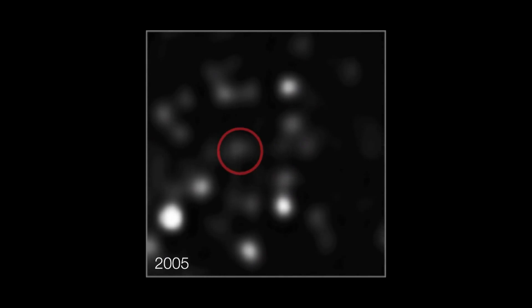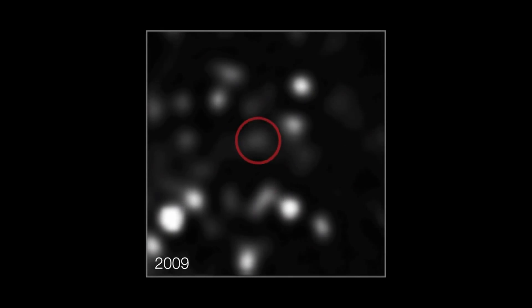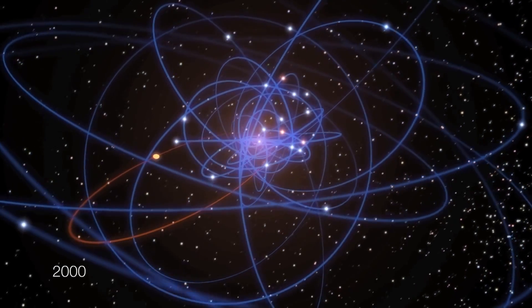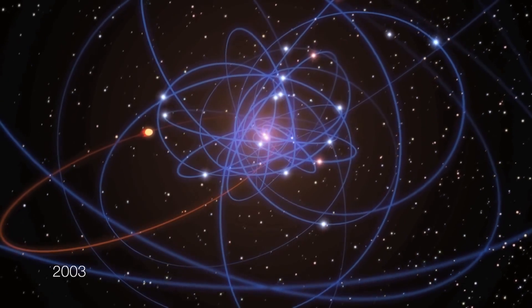As the astronomers watched, the cloud has been picking up pace as it gets closer to the giant black hole. Its speed has doubled in the last seven years, and it is now speeding towards the black hole at more than 8 million kilometers per hour.